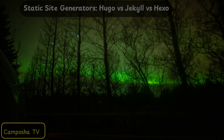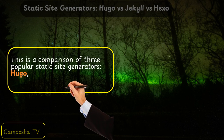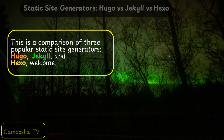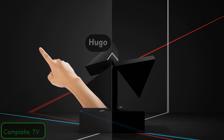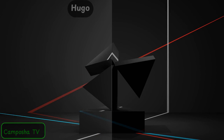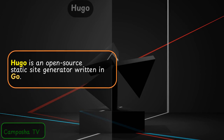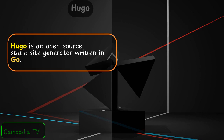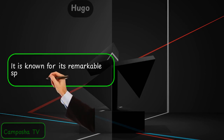Static site generators: Hugo versus Jekyll versus Hexo. This is a comparison of three popular static site generators. Hugo is an open-source static site generator written in Go, known for its remarkable speed and simplicity.